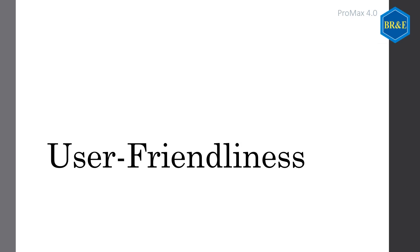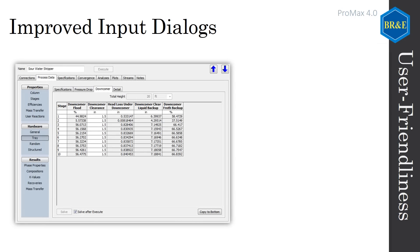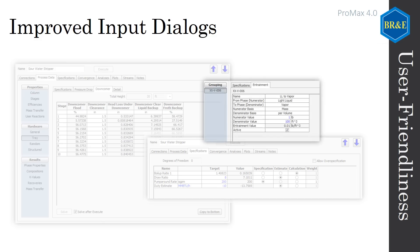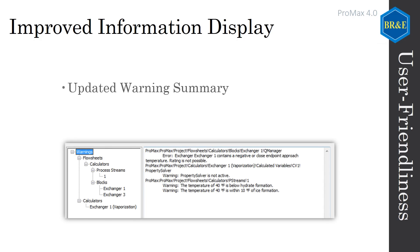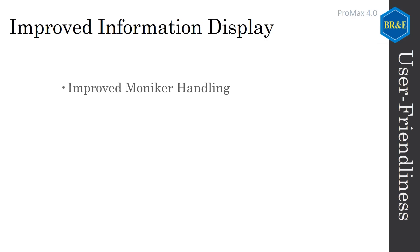Not only have we made significant improvements in our technical abilities and offerings, but we are also committed to making our simulator the most intuitive and user-friendly, without sacrificing power. We've taken this opportunity to improve our user interface in several key locations. More options are available right from the start with a single click of the mouse, and many user inputs have been streamlined and better organized. Distillation columns are easier to solve than ever, with new convergence aids, solution methods, over-specification options, and clearer, faster specification controls. Separators and reactors can have entrainment specified directly, without a need for mixers or splitters. We've updated our warning summary and solver summary to help keep the most relevant information right at hand. We've added improved monitor handling throughout PROMAX, tooltips can now be frozen on screen, and you can pause an executing project at any time.